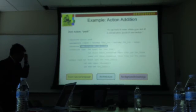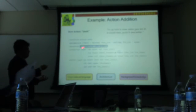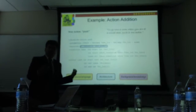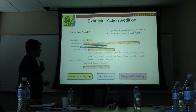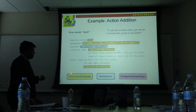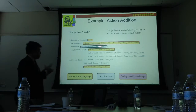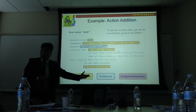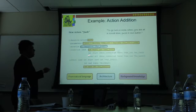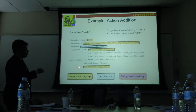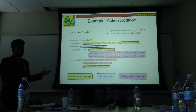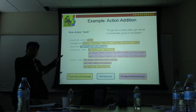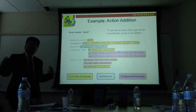Certain components come from different sources. The duration of the push action comes from your architecture — how long it takes the robot to traverse one meter. The name of the action, 'push,' and its parameters — the doorway, current location, destination — come from natural language processing. The conditions and effects come from natural language as well: if you're at that location and push the door, you'll be inside the connected room. Some information also comes from background knowledge.